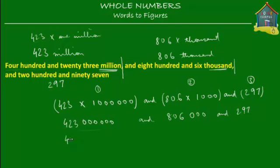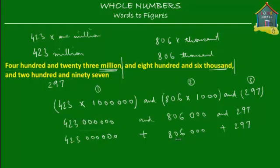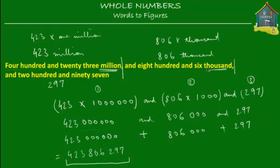So this is 423,000,000 plus 806,000 plus 297. When you add these three bits — 423,000,000, 806,000, and 297 — what you get is 423,806,297.